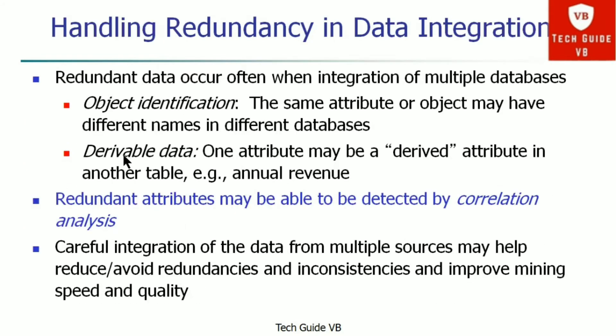How do we handle redundancy in data integration? Redundant data occurs when multiple databases are integrated. Object identification is one approach — the same attribute or object may have different names in different databases. Another source of redundancy is derivable data, where one attribute may be derived from another — for example, annual revenue derived from quarterly or monthly revenue.